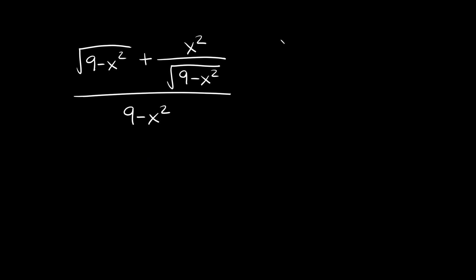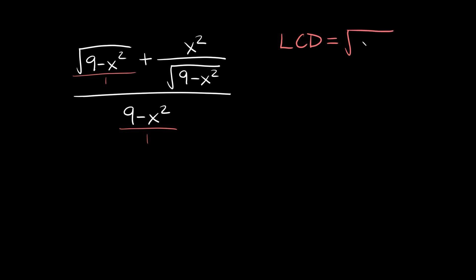Again, the first thing we want to do is find the LCD by multiplying all the different denominators we have. This first term we can put over 1. This one already has a denominator — the square root of 9 minus x squared. The bottom one doesn't have one, so we can put it over 1. Multiplying all denominators together gives 1 times the square root of 9 minus x squared, and anything times 1 is just itself, so the LCD is simply the square root of 9 minus x squared.